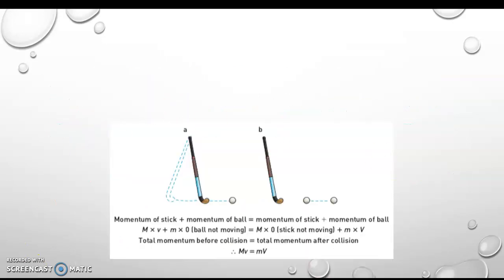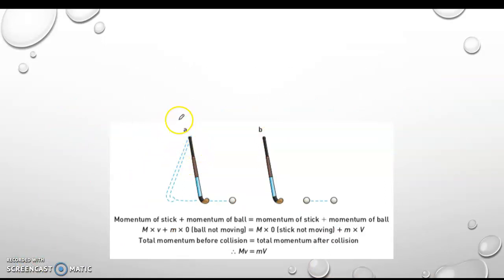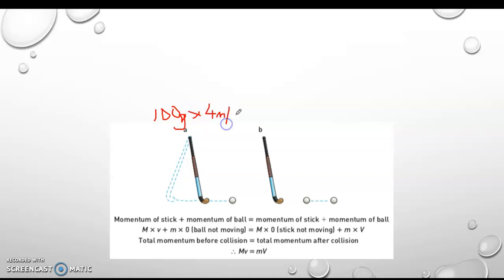Let's talk through this with some made-up numbers. Say the stick is 100 grams and it's going at 4 metres per second. So 100 times 4 gives a momentum of 400 — that's the stick. The ball we know is zero, so therefore the total momentum prior to the collision is 400.